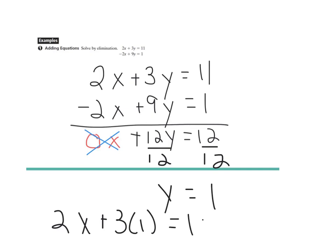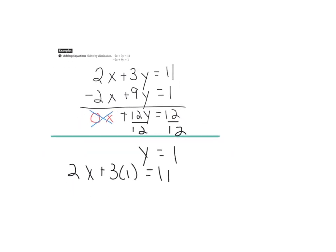And we get 2x equals 8, so x equals 4. So our solution is (4, 1). x is 4, y is 1.